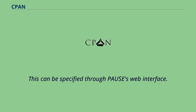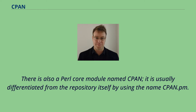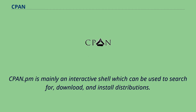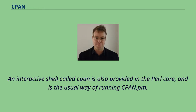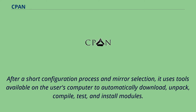There is also a Perl core module named CPAN, usually differentiated from the repository itself by using the name CPAN.pm. CPAN.pm is mainly an interactive shell which can be used to search for, download, and install distributions. After a short configuration process and mirror selection, it uses tools available on the user's computer to automatically download, unpack, compile, test, and install modules. It is also capable of updating itself.